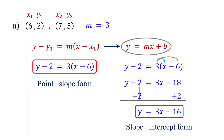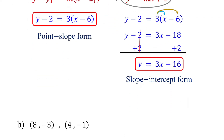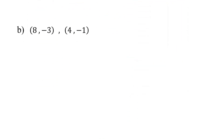By the way, once you find the slope, you can write the slope-intercept form directly without using the point-slope form. Let's see how in the next example.